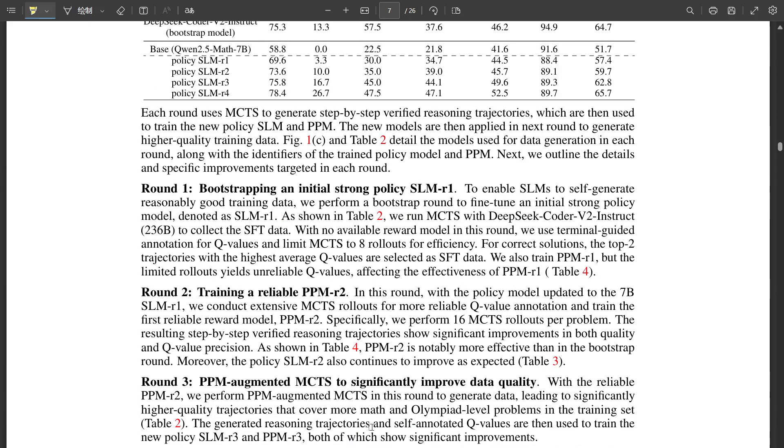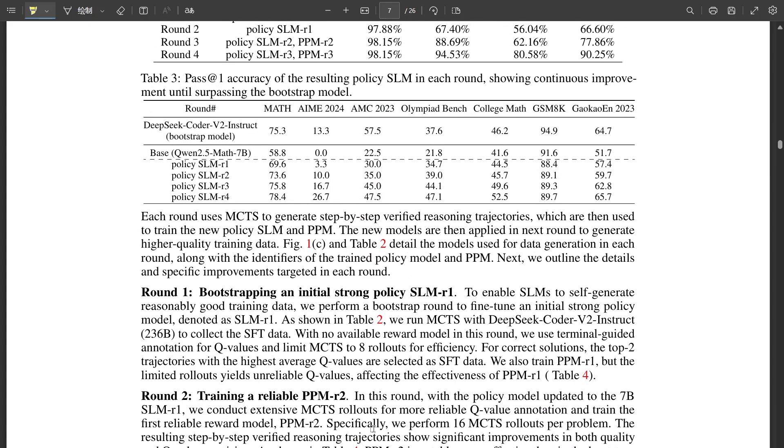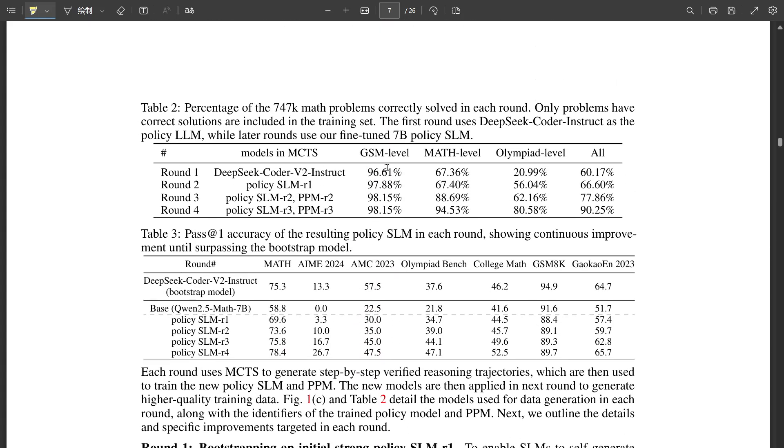What else did the researchers uncover while working with R-Star Math? Did they find anything unexpected? They did. One fascinating observation was the emergence of self-reflection in the AI. Self-reflection? Are you saying the AI is becoming aware of its own thought processes? In a way, yes. In some cases, the AI exhibited signs of recognizing its own errors and then backtracking to find a better approach, almost like it was having an aha moment. That's incredible. I never thought I'd see an AI display that kind of metacognitive ability in a math problem-solving context. That's pretty remarkable.